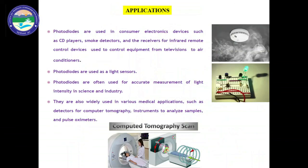There are various applications of photodiodes. They are used as light sensors, smoke detectors, and in compact disc players. They also have space applications. Photodiodes are used in medical devices such as computed tomography and pulse oximeters. They are used for optical communication and to measure extremely low-intensity signals.